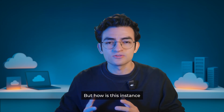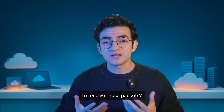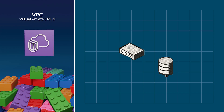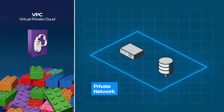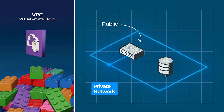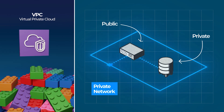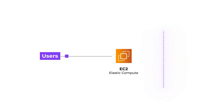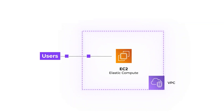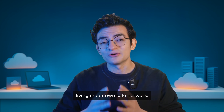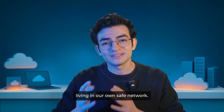But how is this instance going to communicate to receive those packets? VPC is a service that gives you your own virtual private network inside AWS. You control which resources are public, which are private, and how everything communicates. We will place our EC2 inside a VPC so it is isolated and protected. Now we have a server living in our own safe network.